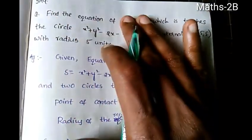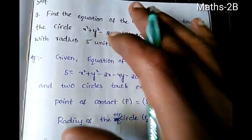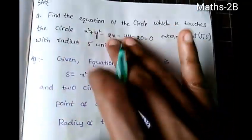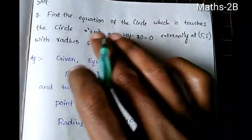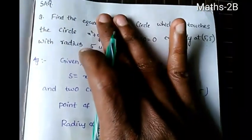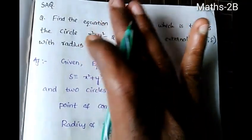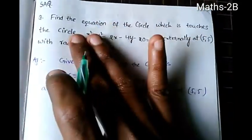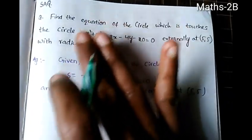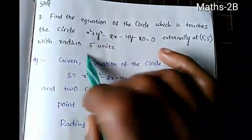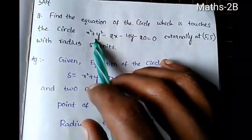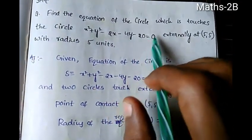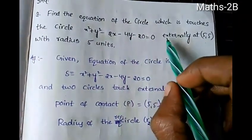We are going to find the equation of the circle that will touch the given circle externally. The given circle is x² + y² - 2x - 4y - 20 = 0.